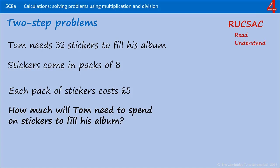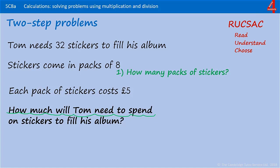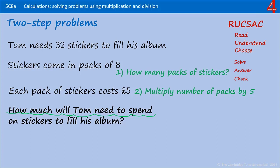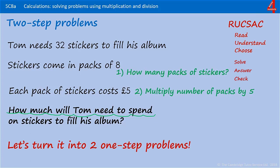So first of all, read through the question and understand what it's asking us to do. We're asked to find out how much Tom needs to spend on stickers to fill his album. We need to choose the calculation we're going to use to solve this: how many packets of stickers does he need to buy, and then we multiply that number by five because each packet is five pounds. Then we're going to solve that calculation and check that we have actually answered the question. So we're going to turn it into two separate one-step problems.